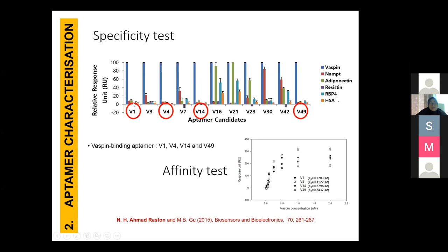From 50 sequences, maybe around 20 samples had the same sequence — meaning that sequence is very specific to the target and binds to it. From the 11 aptamer candidates, we first characterized whether they have specificity to vaspin using SPR, checking the relative response unit from the SPR signal. We select only the aptamer candidates that have no binding to other proteins. In this case, only four aptamers — V1, V4, V14, and V49 — showed very slight non-specific absorption but very high specificity to the target.